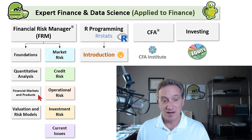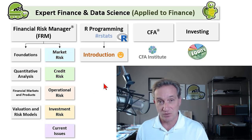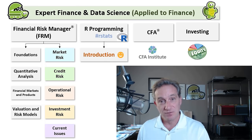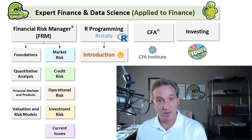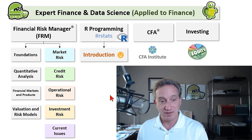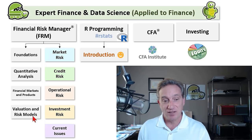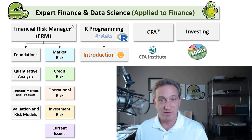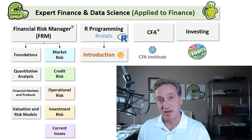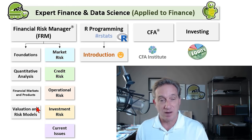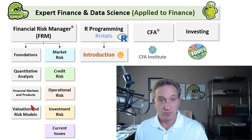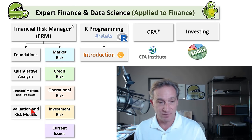Third, financial markets and products, including derivatives — by which we mean options, futures, forwards, and swaps, among other things. Valuation and risk models would include, for example, how do we value, how do we measure risk? A popular risk measure would be value at risk, VAR. So we have a lot of videos on VAR.